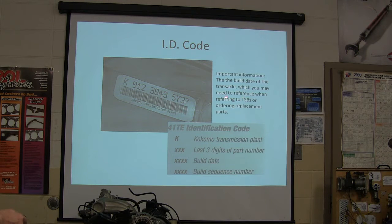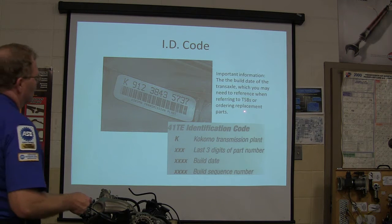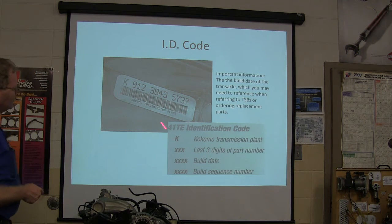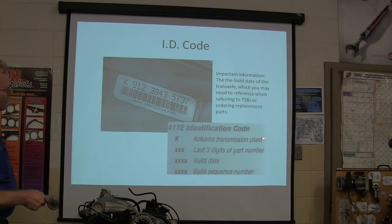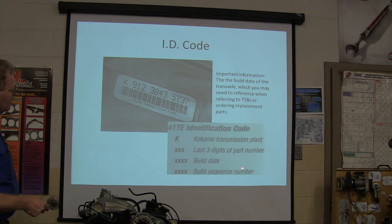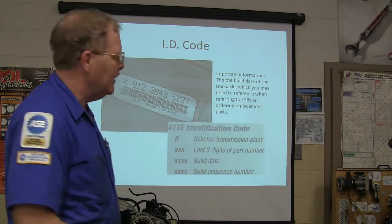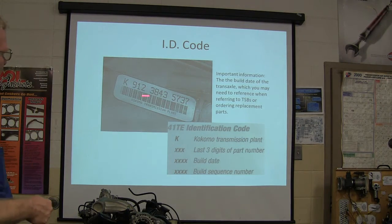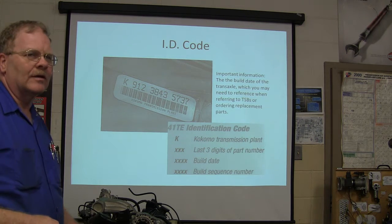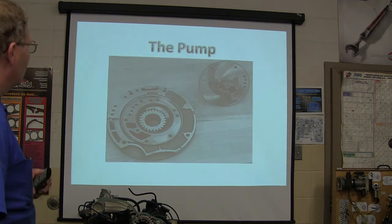So, the build date of the transaxle, you might need it if you're referring to TSBs or ordered replacement parts. K is Kokomo Transmission Plant. The last three digits of the part number is your next one. And then your build date is going to be here. And then your build sequence number is going to be there. And if you have this number right here and you give it to the parts people, they'll typically be able to give you whatever information you need.